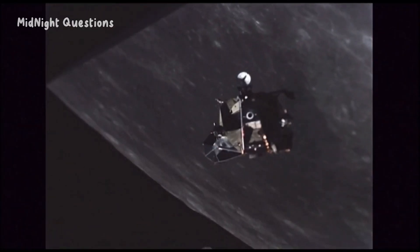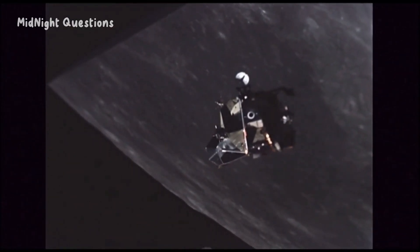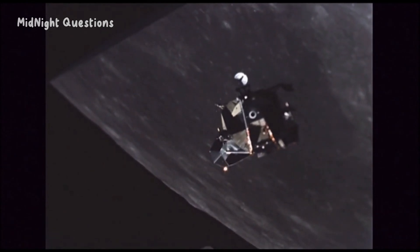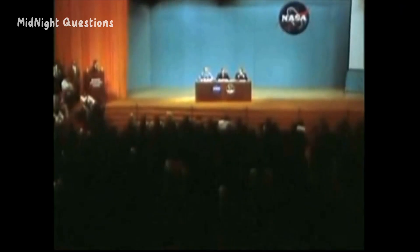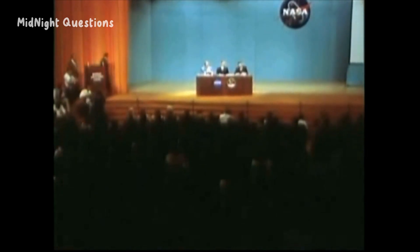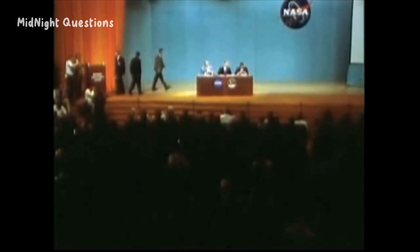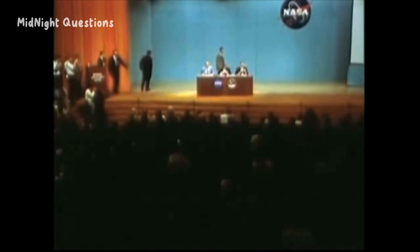One of the most common arguments put forward by moon landing hoax believers is that the technology required to land on the moon did not exist in the 1960s. They argue that the computing power needed to create the special effects required for a convincing fake moon landing was not available at that time.